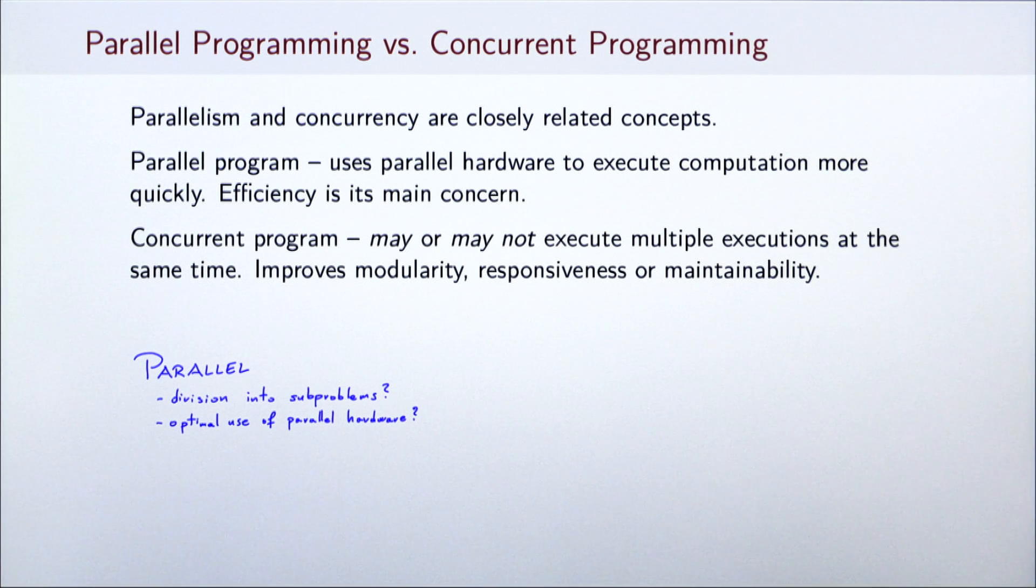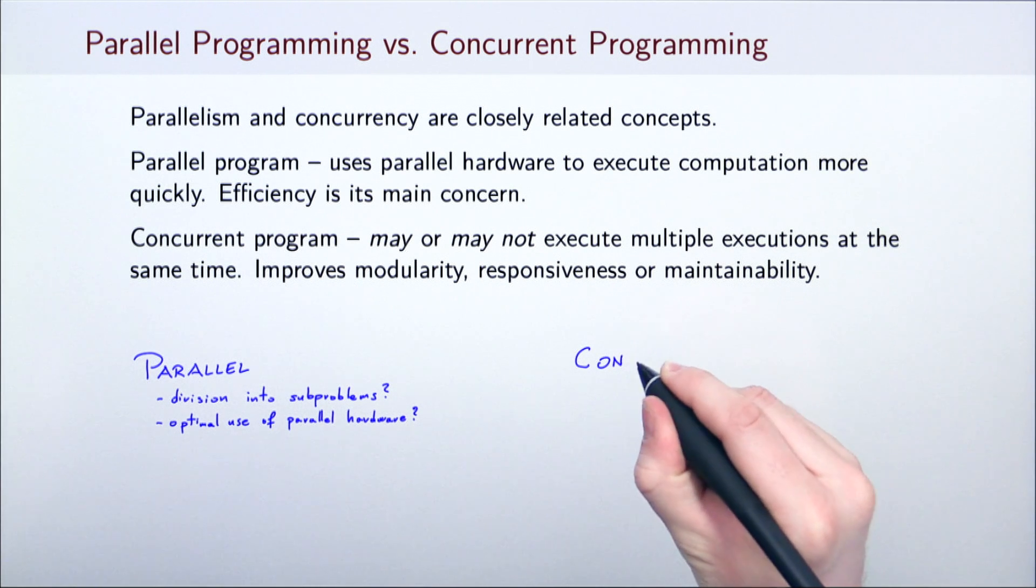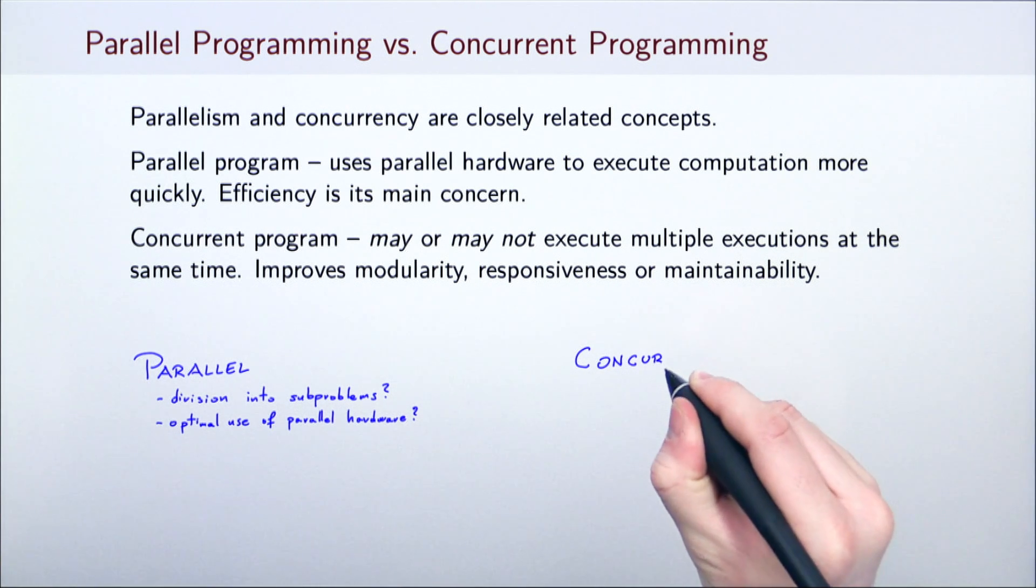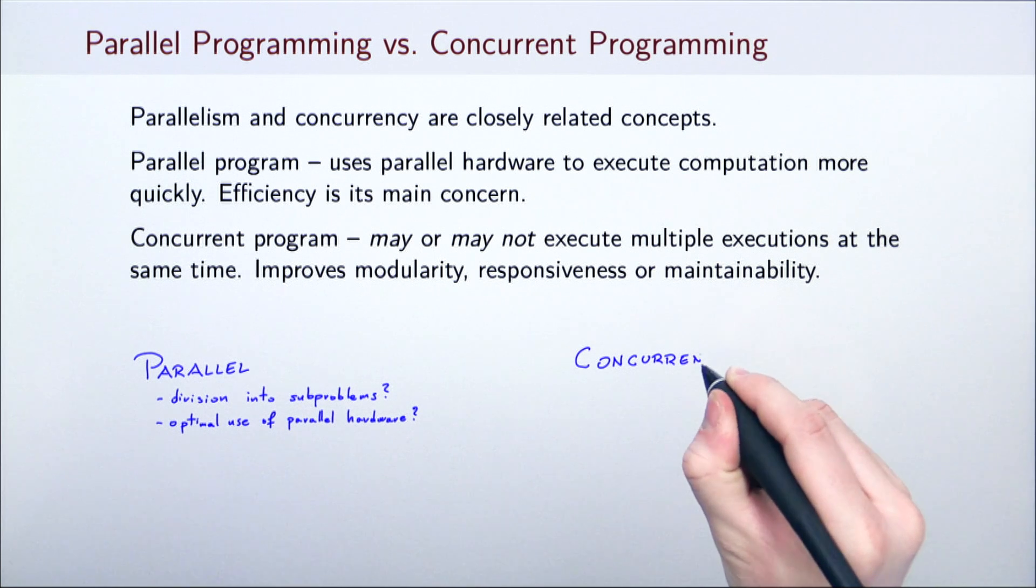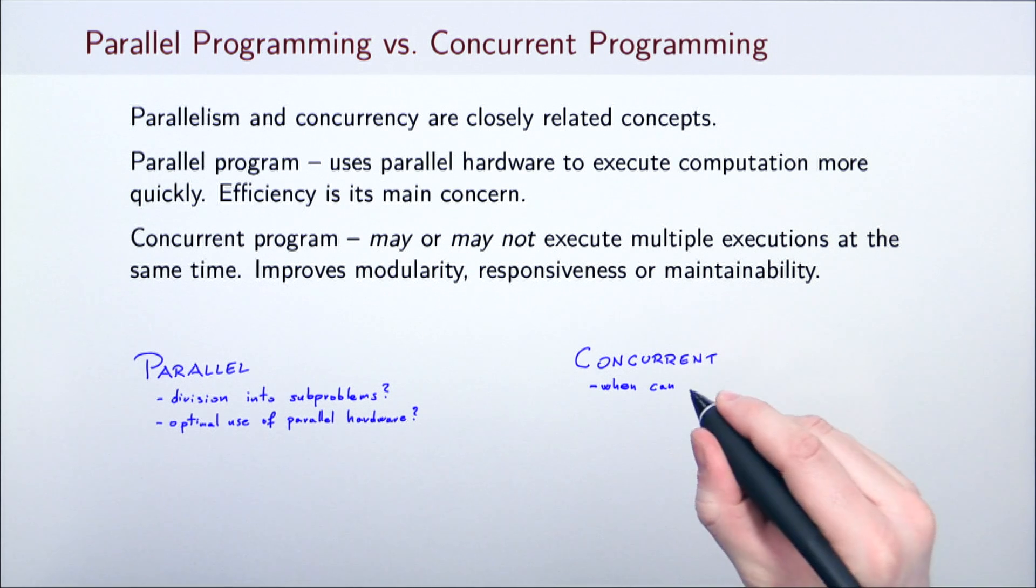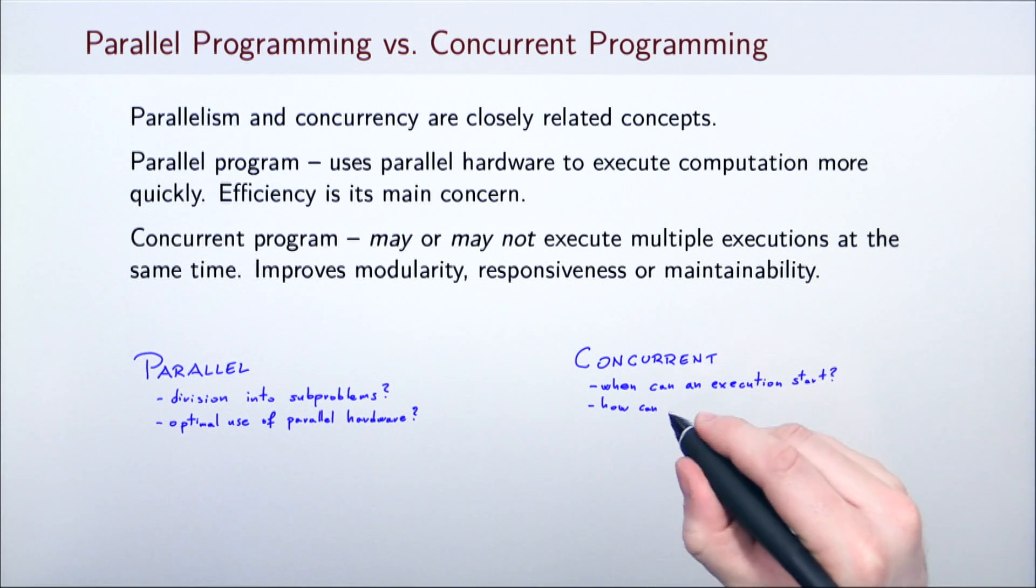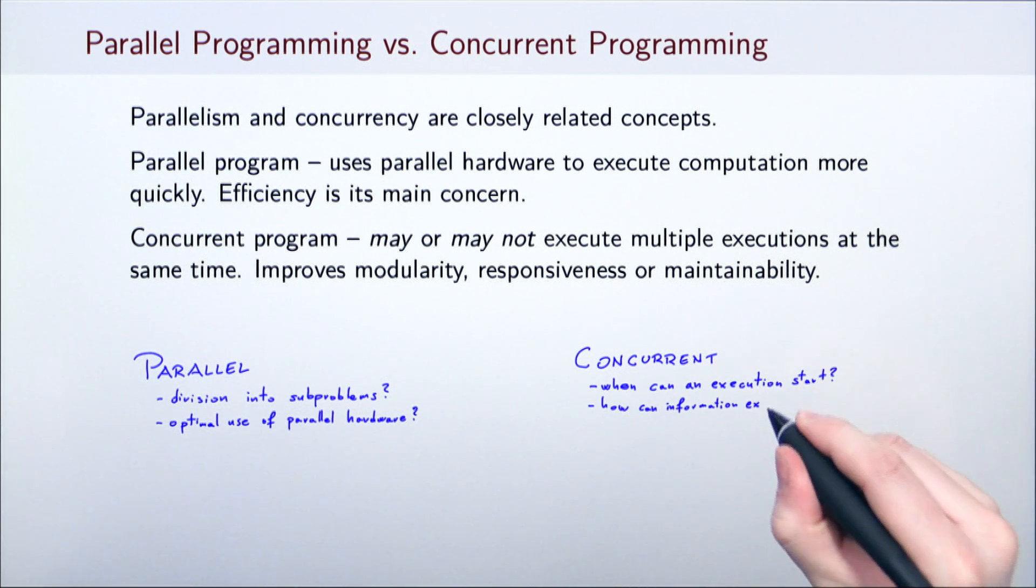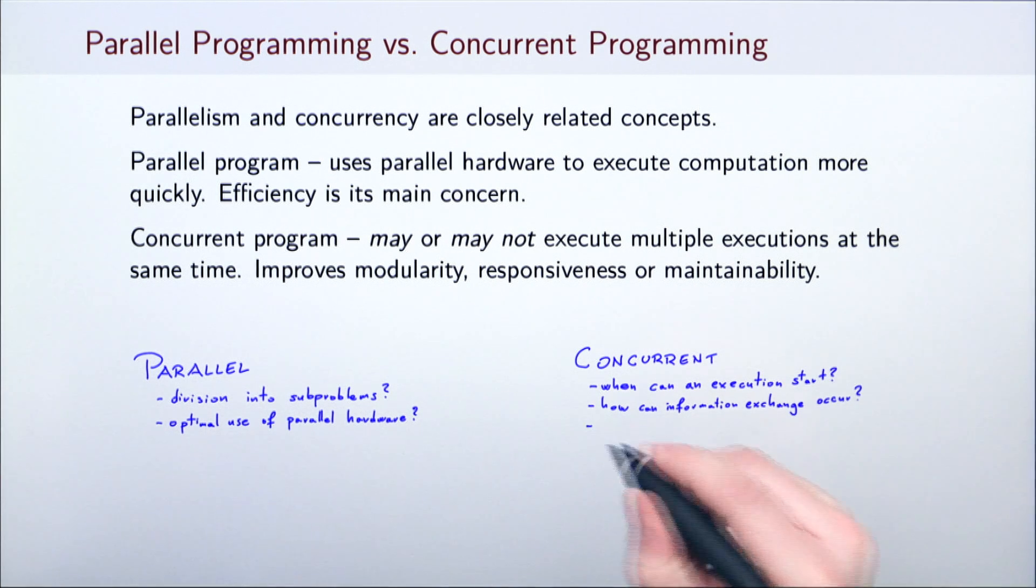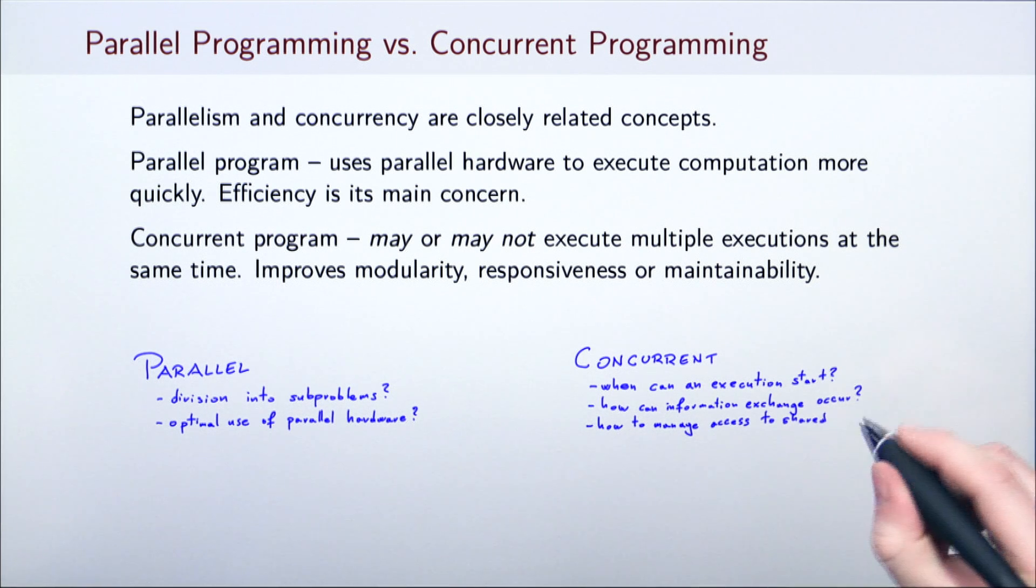A concurrent program is a program in which multiple executions may or may not execute at the same time. Concurrent programming serves to structure programs better in order to improve modularity, responsiveness to input and output events, or understandability of the program. As such, concurrent programming is concerned with questions like when can a specific execution start, when and how can two concurrent executions exchange information, and how do computations manage access to shared resources such as files or database handles.